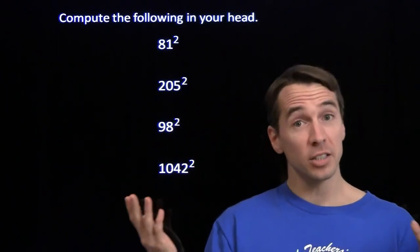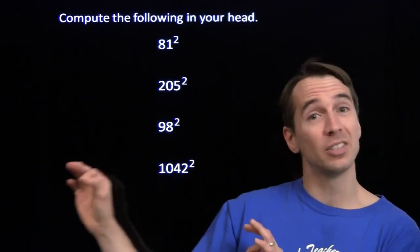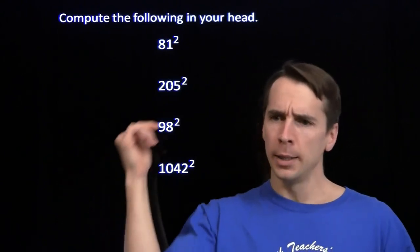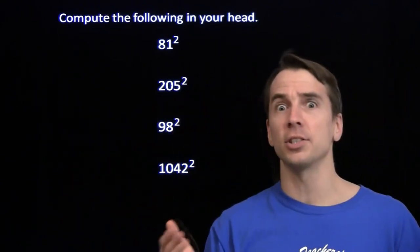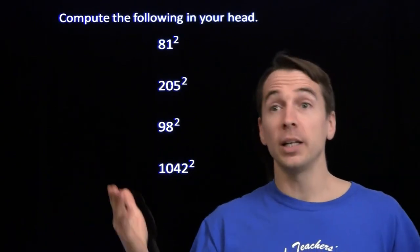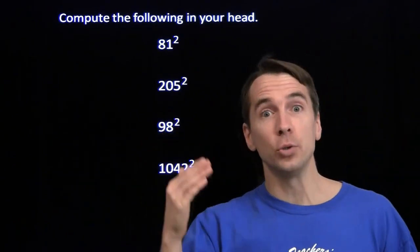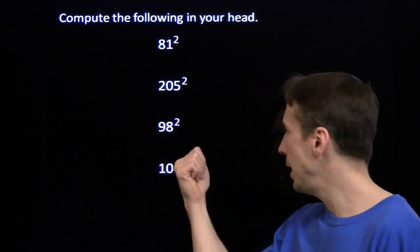Next problem: 205 squared. That's the square of 200 plus 5. 200 squared gives us 40,000. Then 2 times 200 times 5 gives us another 2,000 — 42,000. Then you've got to add on the 5 squared. That gives us 42,025.